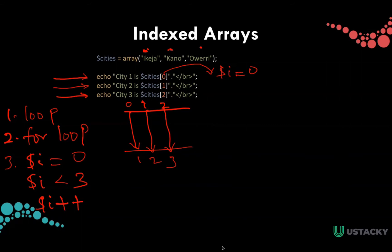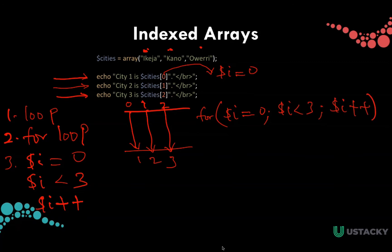The for loop will be something like: for, $i equals zero which is our starting point, $i is less than three which is the number of items in the array, and we have $i plus plus. Now to write the block of code, we only need to execute a piece of code and repeat three times.